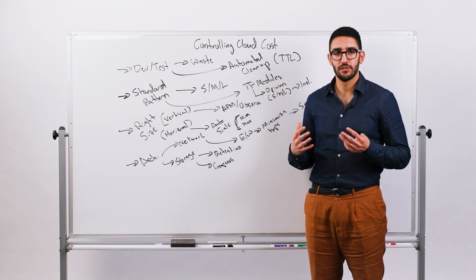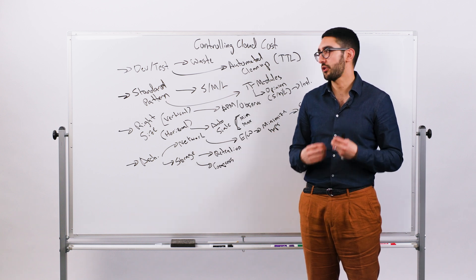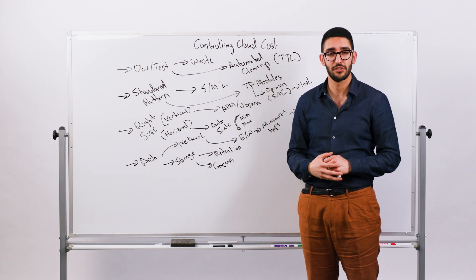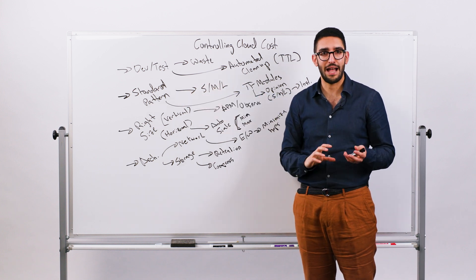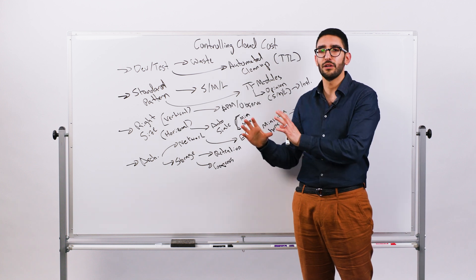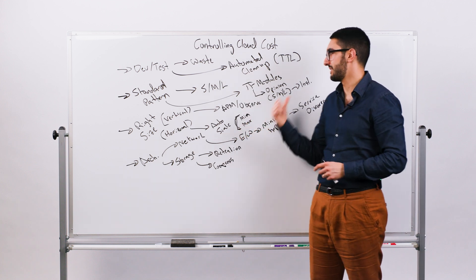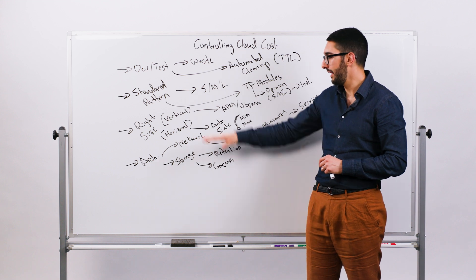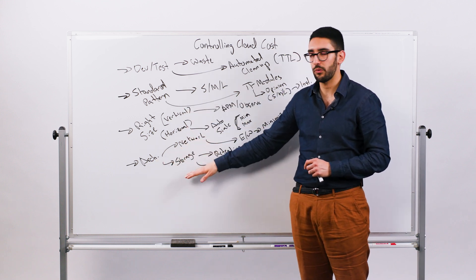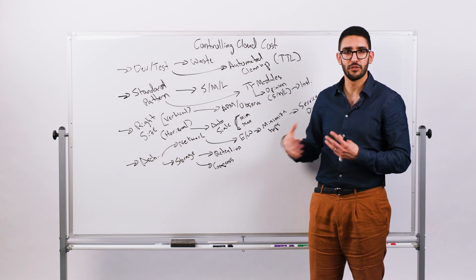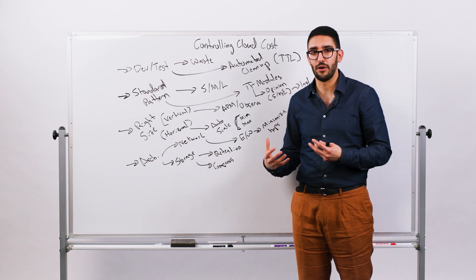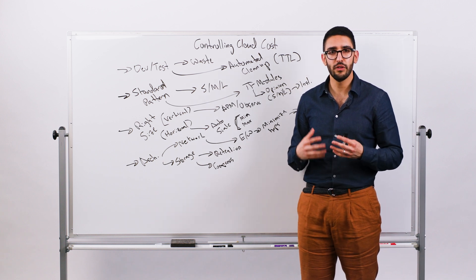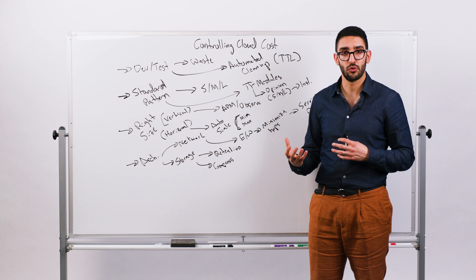Hopefully that's helpful as we think about different ways of controlling cloud costs without actually having to do less. Start with your dev test environment—what can you do around automated cleanup? That doesn't impact production, so it's an easy place to start. From there, think about standardization of patterns. If your app teams use consistent patterns, it makes it easier for platform teams to drive fin-ops optimizations downstream. Then get into right-sizing, both vertical and horizontal, to leverage compute more effectively. From an architectural perspective, think about storage and networking—how are they utilized? There's relatively low-hanging fruit in terms of how those can be used more efficiently without doing less in cloud. You're using cloud in a more efficient way. Hopefully that's a helpful overview. We'll see you next time.